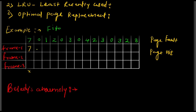We mark this page fault. Next required is 0, but only 7 is in memory, so 0 is not present — another page fault. Zero is copied into an empty frame. Next required is 1, also not present, so another page fault. It is copied into the empty frame. Now all three frames are occupied with 7, 0, and 1. Next required is 2 — not present, so page fault. Using FIFO, we replace 7 since it was loaded first. Two is loaded.